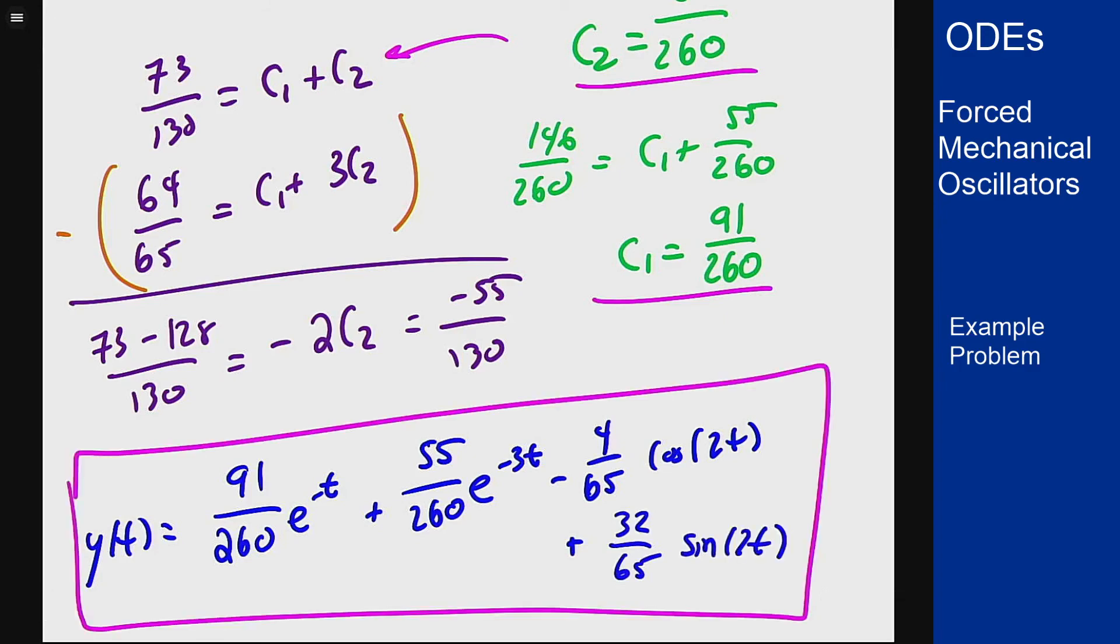There's a lot of messy algebra in solving for constants but that is the process you have to follow to solve these initial value problems for non-homogeneous equations. This tells the position of the mass at any given time, and if you look at the amplitude of the oscillation it'd be really small. In this case there's a lot of damping force in this problem.